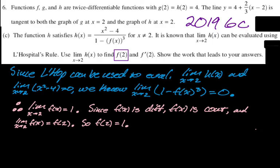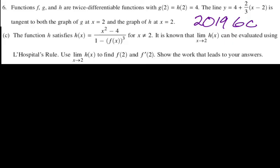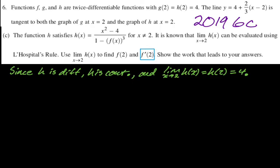Now we need to find F'(2). We know F(2) = 1. We also know H is differentiable — that's given — so H is continuous, and therefore the limit as x approaches 2 of H(x) equals H(2) = 4. This differentiability-implies-continuity idea keeps coming up over and over in these problems.